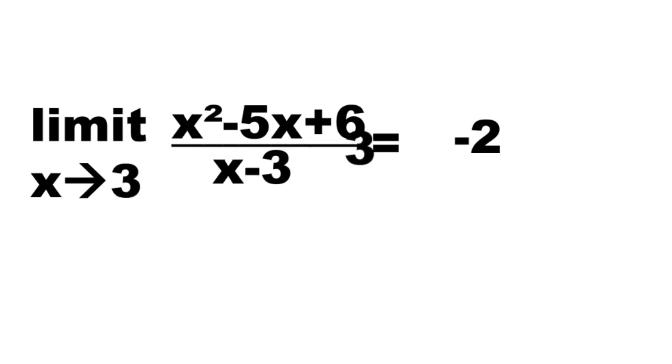Now substitute 3 for x, so 3 minus 2. 3 minus 2 is 1. So the limit of x squared minus 5x plus 6 over x minus 3 as x approaches 3 is 1.